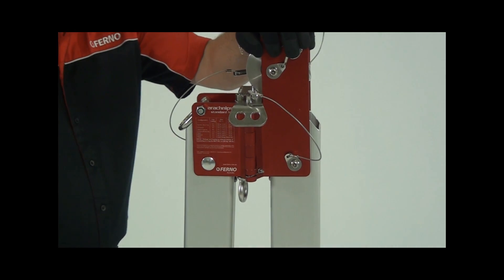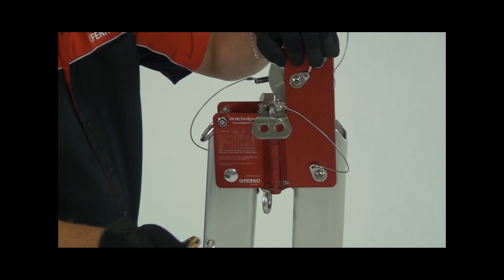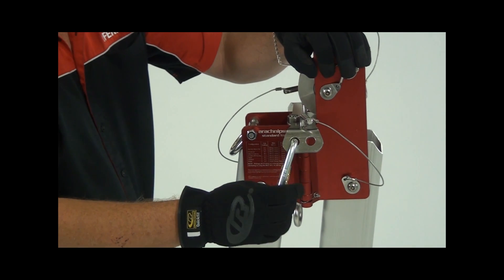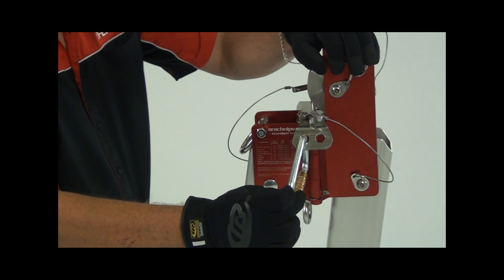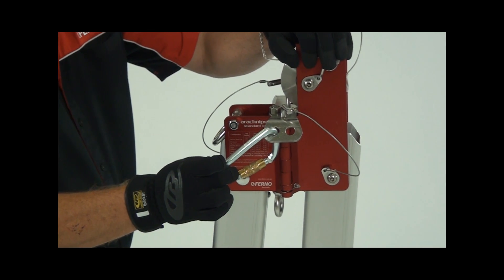These are the rigging stabilization attachment points. This configuration can be used as either a standard A-frame or a sideways A-frame.